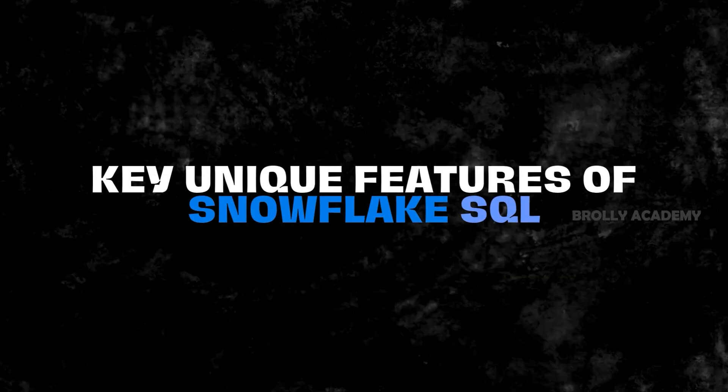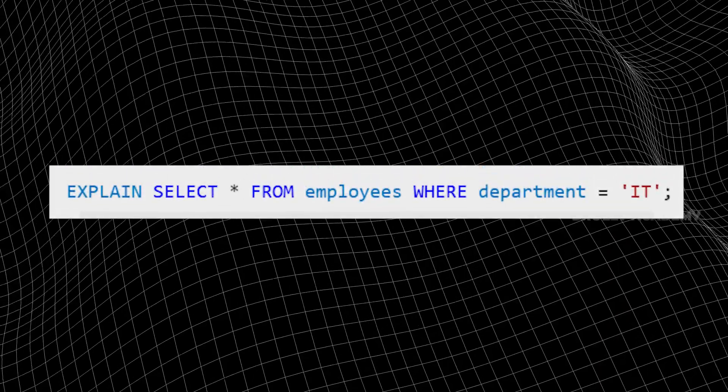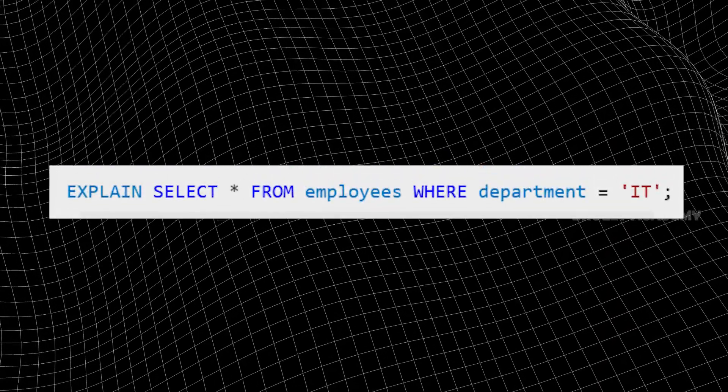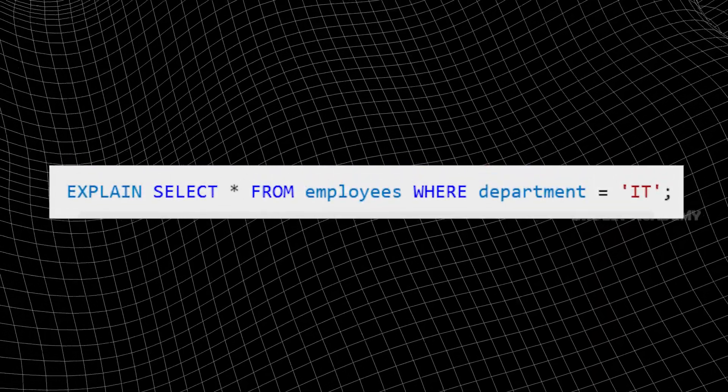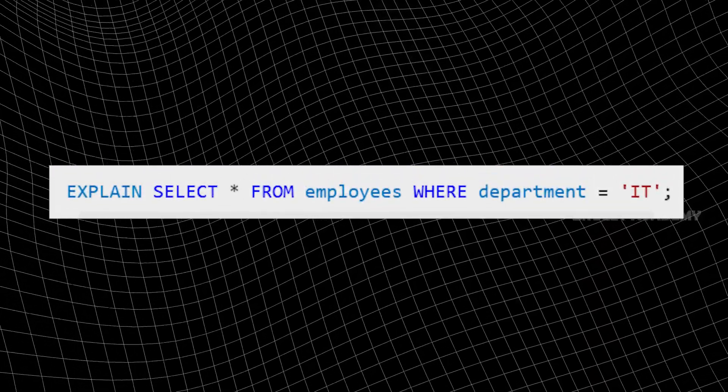Key features: Automated Query Optimization. Snowflake automatically optimizes queries. The execution plan is optimized for better performance. For example, the EXPLAIN command is used to show the Query Execution Plan.